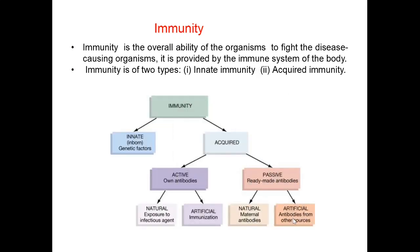Let us classify immunity. Innate immunity is due to genetic factors and it is inborn, whereas acquired immunity is acquired during one's lifetime. Acquired immunity is of two types: active and passive. Active immunity is provided by the body's own antibodies — naturally through exposure to an infectious agent, or artificially through immunization. Passive immunity involves readymade antibodies introduced into the organism's body — naturally due to maternal antibodies, or artificially when antibodies are provided from another source.